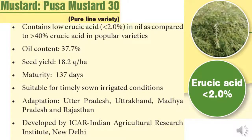Coming to important varieties released recently: during 2016, Pusa Mustard 30 is a pure line variety containing low erucic acid (less than 2%) compared to more than 40% erucic acid in popular varieties. The oil content is 37.7%, seed yield is 18.2 quintals per hectare, maturity duration is 137 days. It is suitable for timely sown irrigated conditions, with adaptation in Uttar Pradesh, Uttarakhand, Madhya Pradesh, and Rajasthan, developed by IARI. The peculiarity of Pusa Mustard 30 is it is developed for quality improvement.